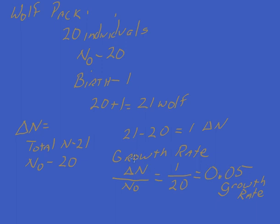How we got growth rate is we took the change in N, which we found by subtracting N-naught from the total number of individuals, which gave us a change in N of 1, which gave us a 0.05 growth rate.